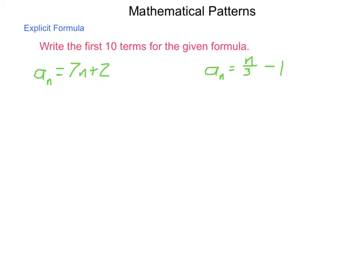First, the explicit formula. Write the first 10 terms for the given formula. So, a sub n equals 7n plus 2. You can see we have the subscript of n, and we're looking at a formula in terms of n.